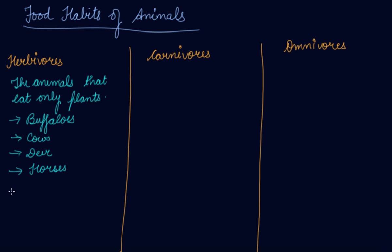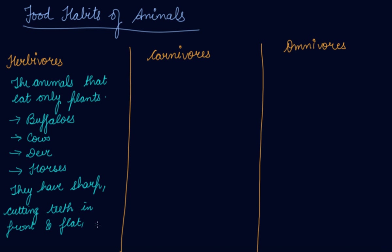Now, what about their teeth? Herbivores have sharp cutting teeth in the front and flat grinding teeth at the back, so that they can grind their food easily.